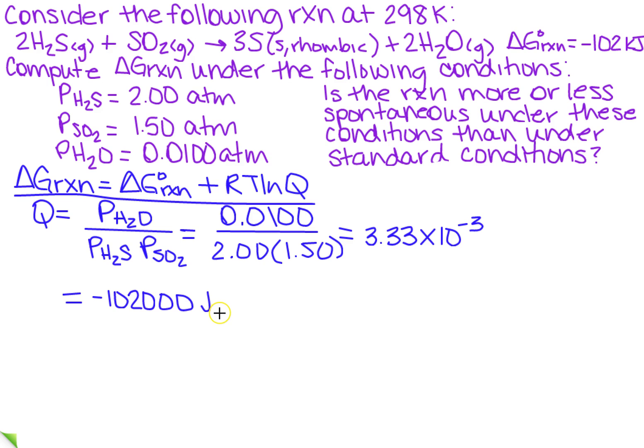And then I'm going to add to that the rate constant, which is 8.314 joules over mol Kelvin. And then I'm going to multiply by the temperature, which they gave us, which was 298 Kelvin. And then I'm going to multiply by what?